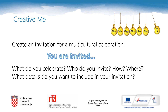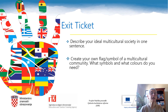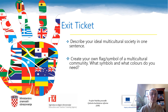When you write your invitation, you can share it with your teacher and your classmates. The last activity in this lesson is your exit ticket: describe your ideal multicultural society in one sentence and write your sentence in your notebook. Also, create your own symbol — it can be a flag or some other kind of symbol of a multicultural community. What symbols and colours do you need to include? When you finish your exit ticket, that's the end of today's lesson. I hope you have enjoyed thinking and learning about multicultural societies. Goodbye until our next lesson.